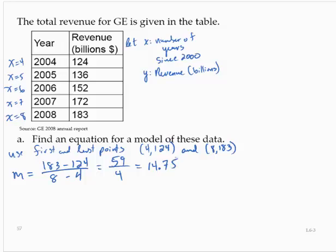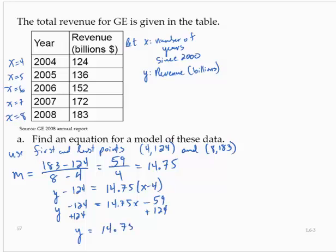Using the slope and one of the points, I'll just use the first point, I would have y minus 124 is 14.75 times x minus 4. Or y minus 124 is 14.75x minus 59, adding 124 to both sides. Y would equal 14.75x plus 65.